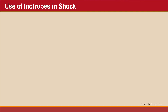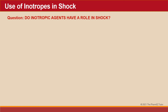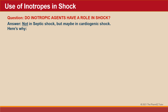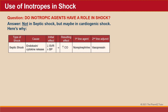Do inotropic agents have a role in shock? Not in septic shock, but maybe in cardiogenic shock. In septic shock, endotoxin and cytokine release decreases SVR and blood pressure, resulting in an increase in cardiac output. Since we use norepinephrine and vasopressin as therapy, we do not need an inotropic agent in septic shock because cardiac output is already high.